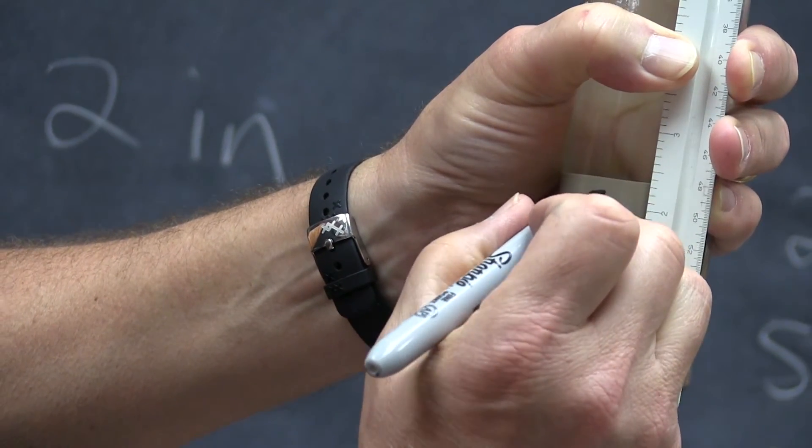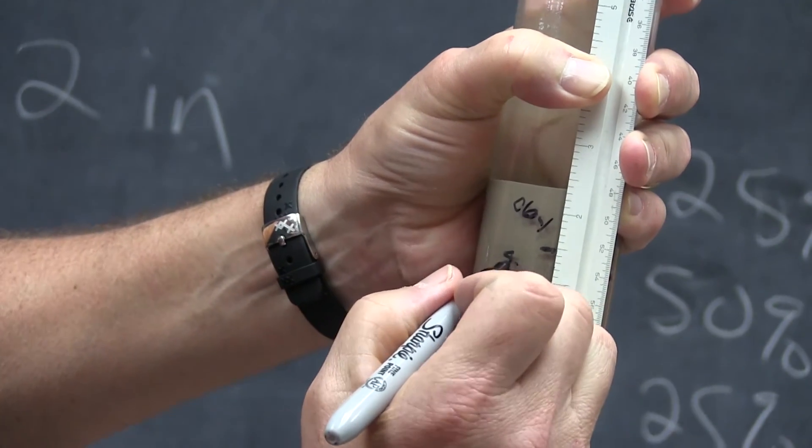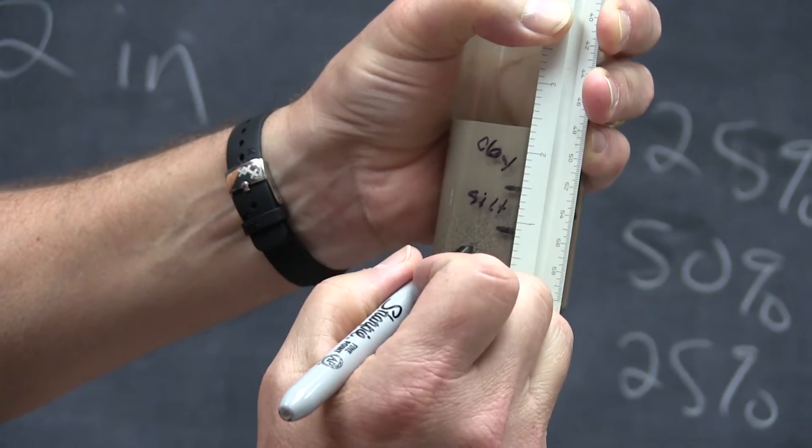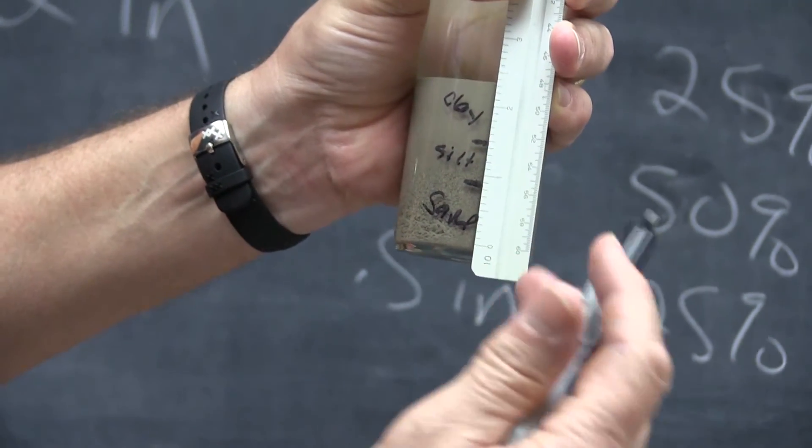You can then use the soils textural triangle to estimate your soil textural classification. This will be helpful to know when determining how to amend your rain garden soil.